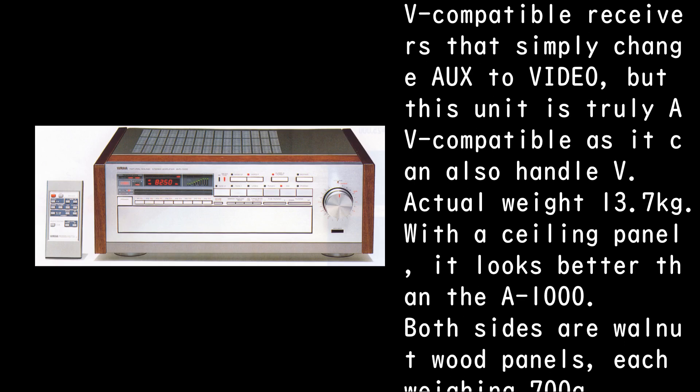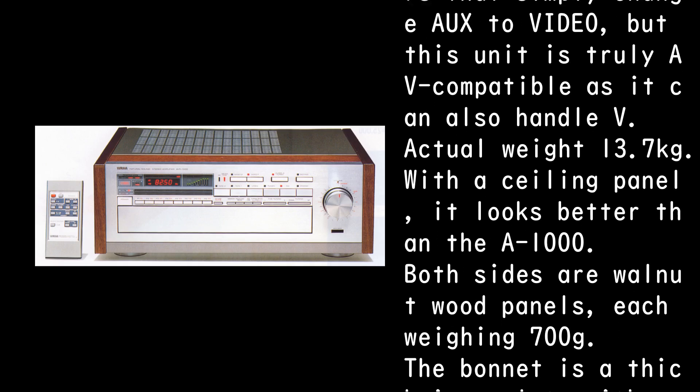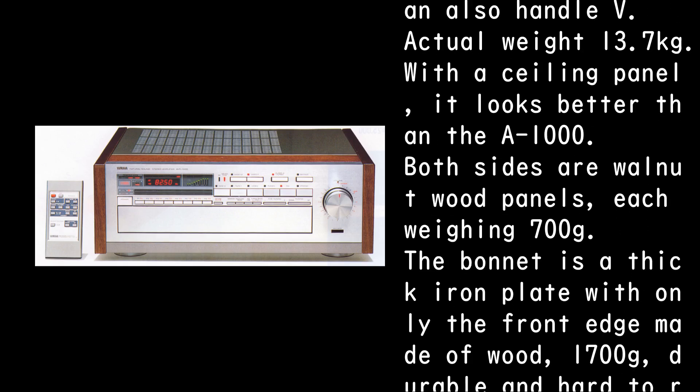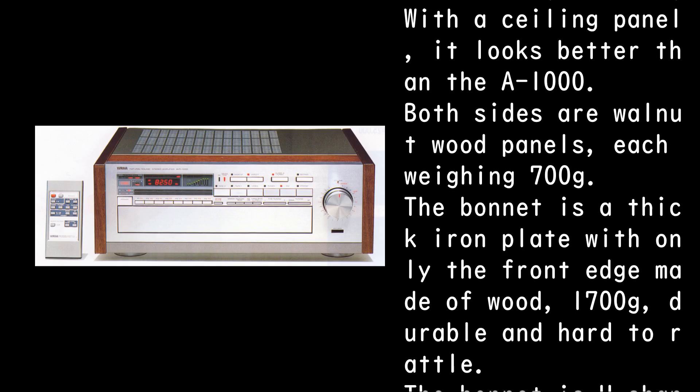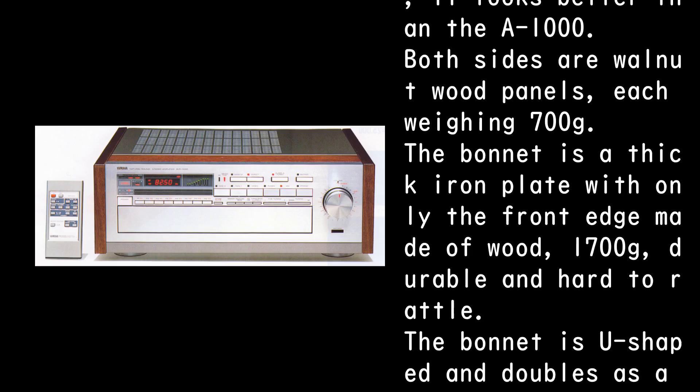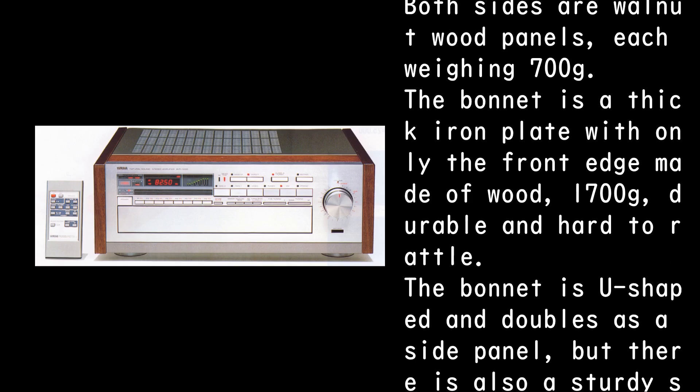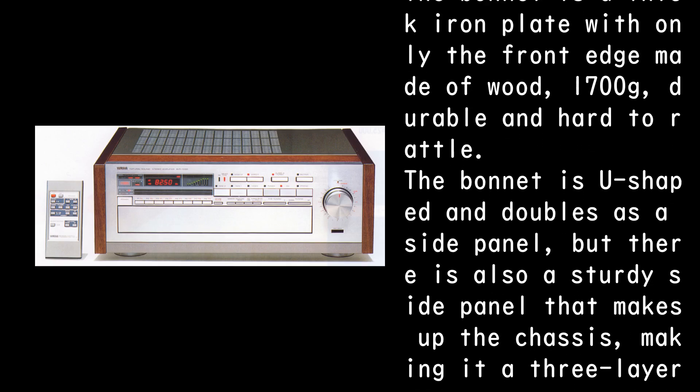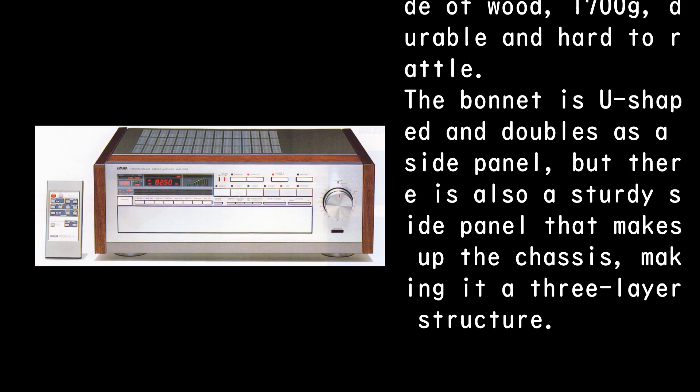Actual weight 13.7 kg. With a ceiling panel, it looks better than the A-1000. Both sides are walnut wood panels, each weighing 700g. The bonnet is a thick iron plate with only the front edge made of wood, 1700g, durable and hard to rattle.